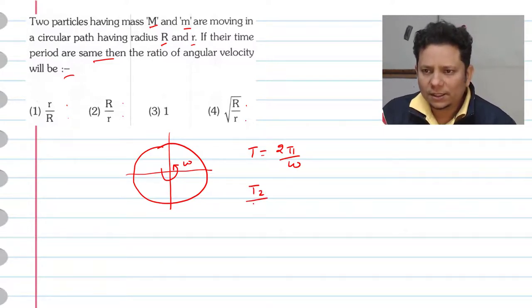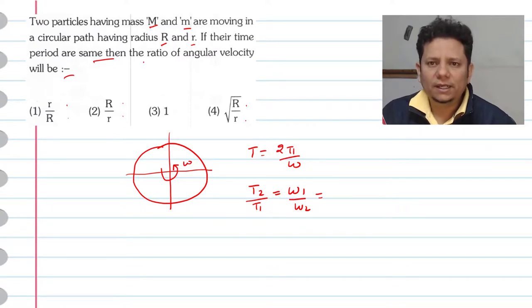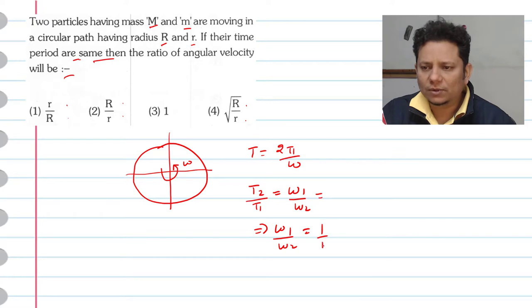So whenever we write T₂ divided by T₁, that will be equal to ω₁ divided by ω₂. In this case, since we are given that their time periods are same, which implies omega 1 divided by omega 2, this ratio will be 1 is to 1. Because time period is same, option number 3 would be the right answer.